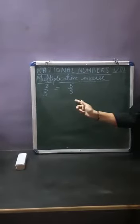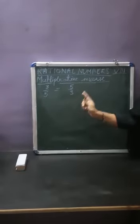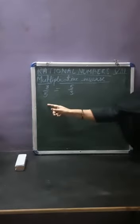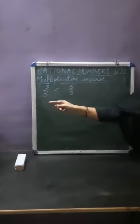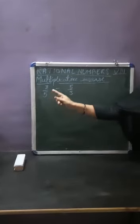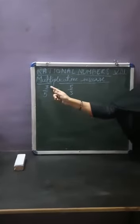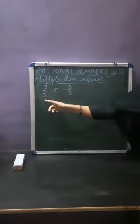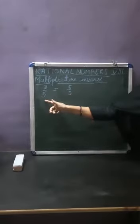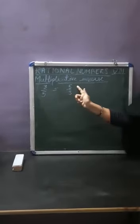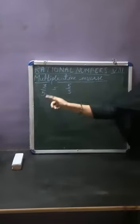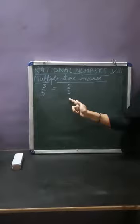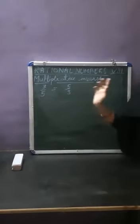To get the multiplicative inverse of any rational number, we will convert the numerator to the denominator and the denominator will convert to the numerator. So it is the multiplicative inverse of the given rational number.